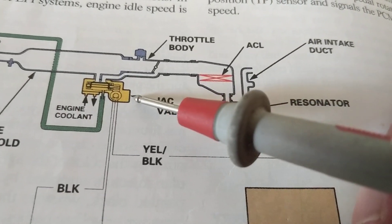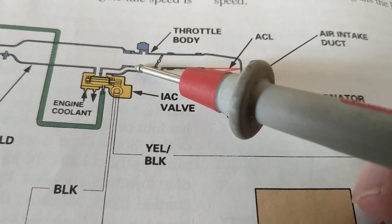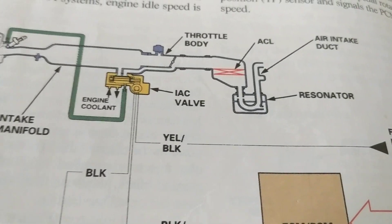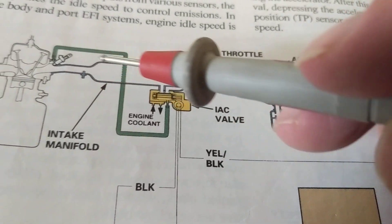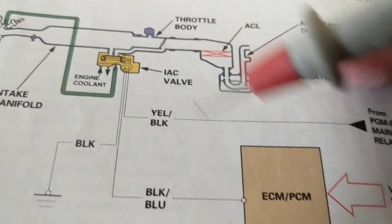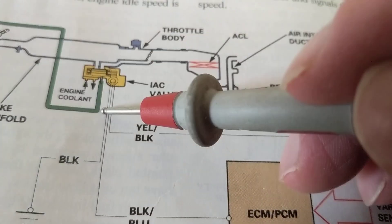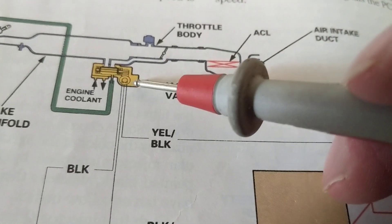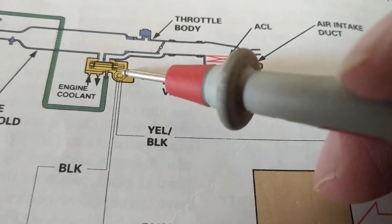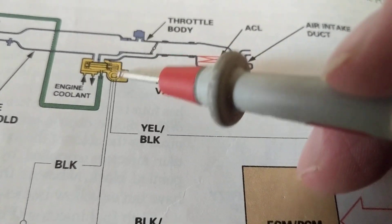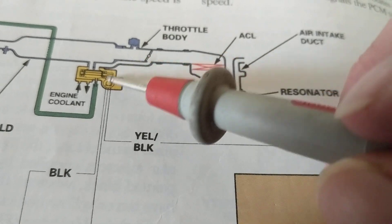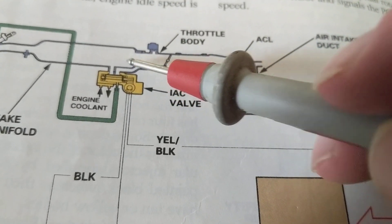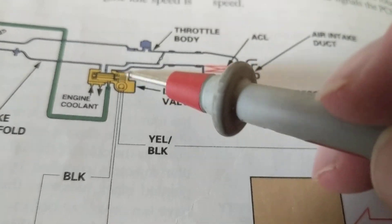It's a valve, idle air control valve that lets air in. It lets more air go in or less air go in. When the computer sees that, more air means more fuel, less air means less fuel. So based on the valve position, the position of the stepper motor and the actuator, it'll either let more air in or less air in.